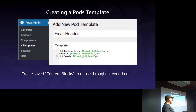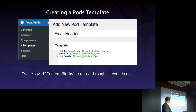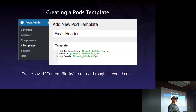You also have the option of creating a pods template that's saved in the database. This is under Pods Admin > Templates > Add New Template. You give it a title, get a little code editor screen, and create your HTML content block. Think of these as little content blocks to reuse throughout your theme to show your custom content — the fields you've added to post types.